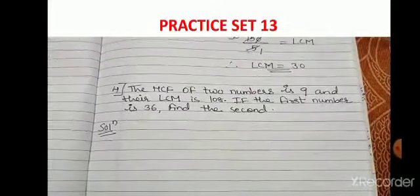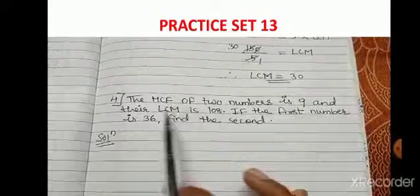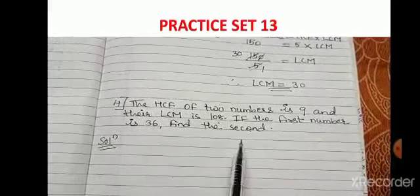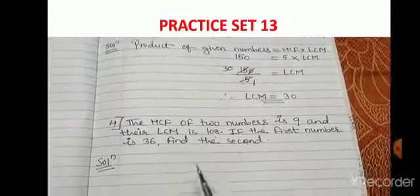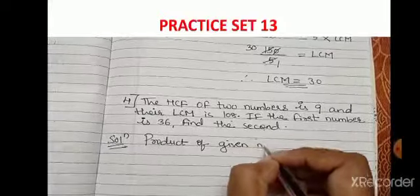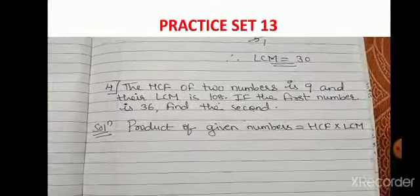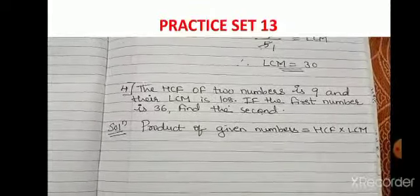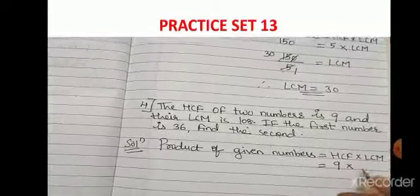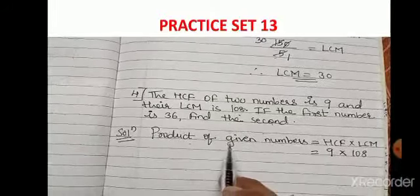Now question 4 from your workbook: the HCF of two numbers is 9 and their LCM is 108. If the first number is 36, find the second number. We write the statement: product of given numbers = HCF × LCM. Given: HCF = 9, LCM = 108, first number = 36, and we have to find the second number.